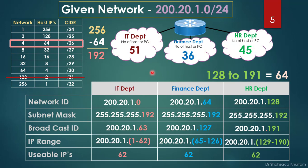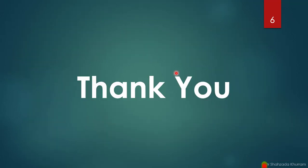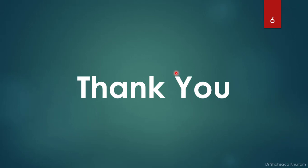We created three subnets from the given address, and one block of 64 IPs is still remaining. If a new department is added in the future, we can allocate that fourth subnet to it — saving those 64 IPs for future use. I hope you understand how to do IP subnetting and how to enhance security in a network environment. Thank you so much — please share this video and subscribe to the channel.